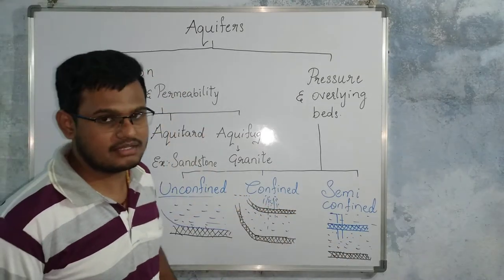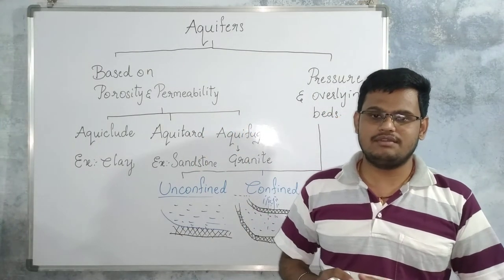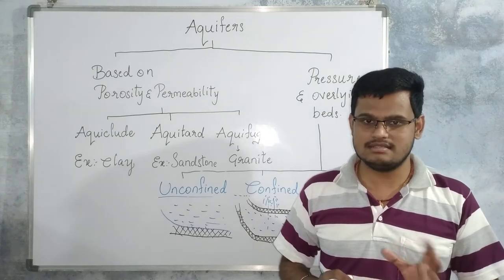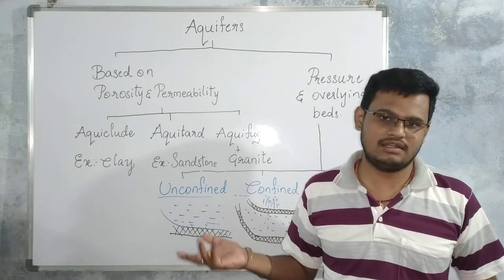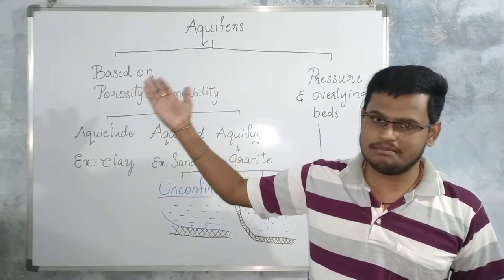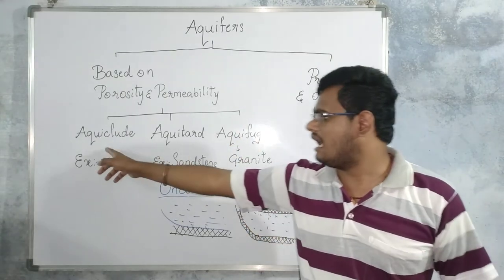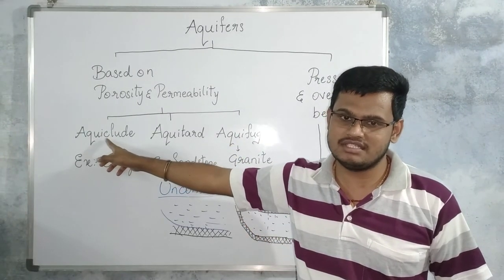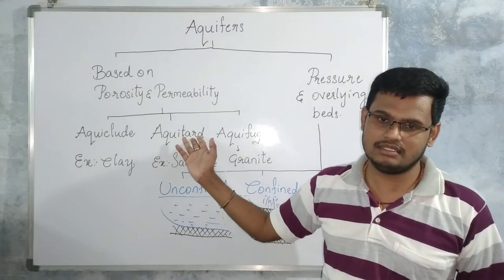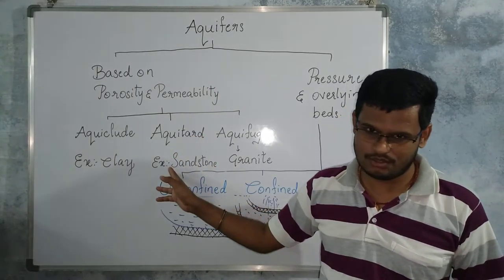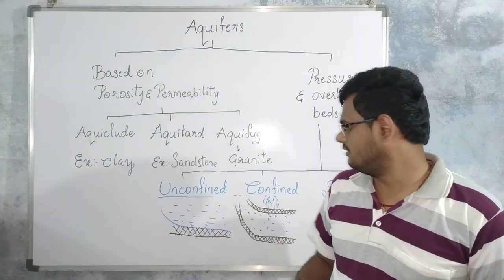To recap: aquifers are permeable rock formations in which water is stored in high volume beneath the surface, received through precipitation and infiltration. Based on porosity and permeability, aquifers are of three types: aquiclude — porosity present but permeability absent, best example is clay; aquitard — good porosity and permeability, best example is sandstone; and aquifuse — a compact rock with both porosity and permeability absent, best example is granite.